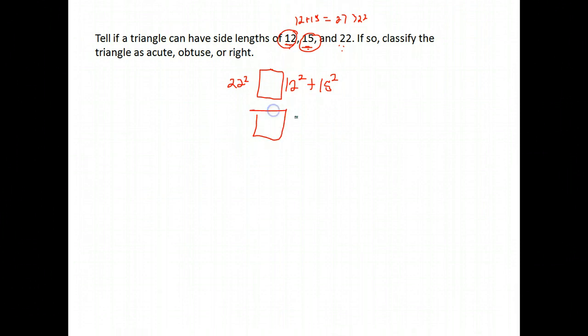All right, well 12 squared is 144, 15 squared is 225. I'm going to go ahead and add those together.